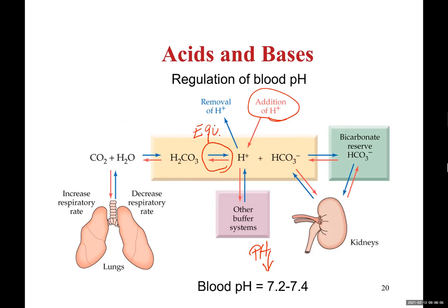What do we know about equilibrium reactions? Remember Le Chatelier's principle — equilibrium is going to shift to counteract any changes. That means if acid is coming in, this equilibrium is going to shift in the reverse direction to consume the acid. The equilibrium shifts so that hydrogen ion is consumed by reacting with bicarbonate ion, making carbonic acid. So the hydrogen ion which entered the blood is now used to produce carbonic acid.